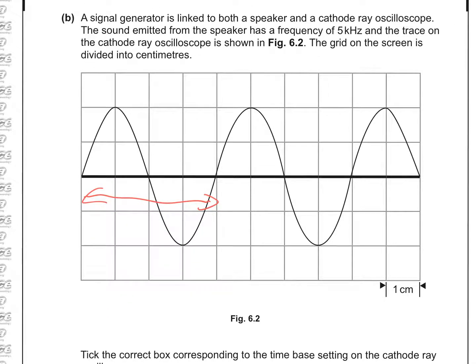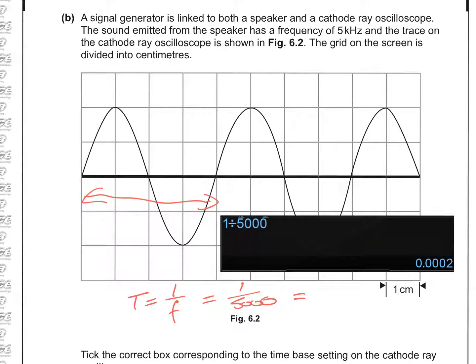So we need to relate that to the numbers they gave us at the top of the page. So we've got a frequency of 5 kHz. So we can turn that into a period. Because T equals 1 over F. And so 1 over F is 1 over 5,000. 5 kHz is 5,000 Hz. That gives us a value of 0.0002 of a second.